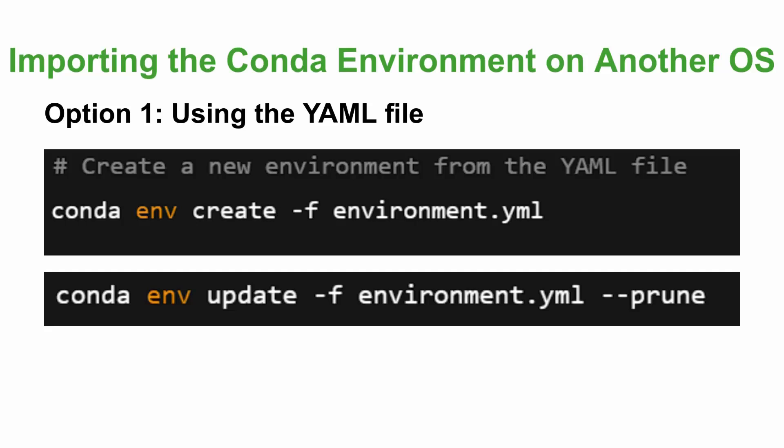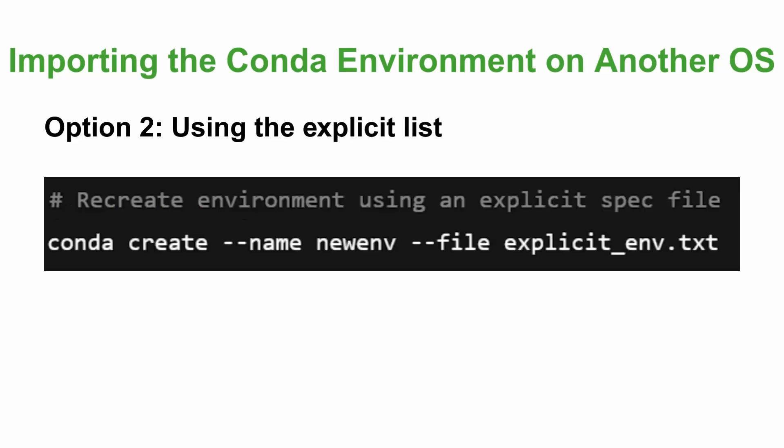The --prune command removes dependencies not listed in the YAML file. The next option is using the explicit list, which is less common but a more controlled method. You can recreate the environment using an explicit spec file by writing 'conda create --name new_environment --file explicit_environment.txt'.